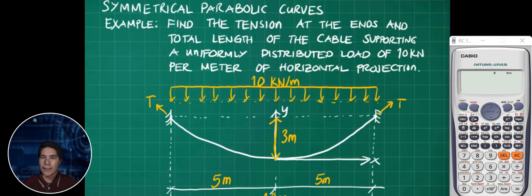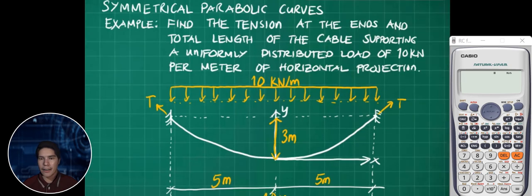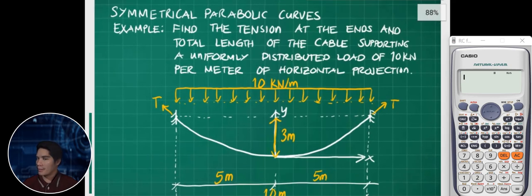The second question is: what is the total length of the cable? It is supporting a uniformly distributed load of 10 kN per meter of horizontal projection. Since the projection is horizontal, the suspended cable is assumed to be parabolic curve. We have 3 meters height, and the distance is 10 meters total - 5 meters on each side.